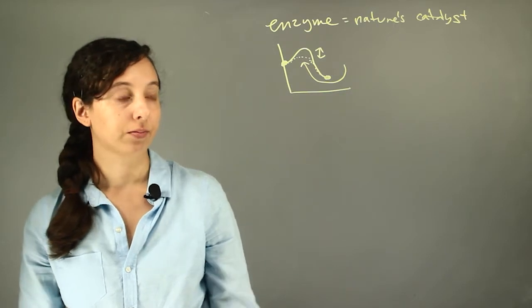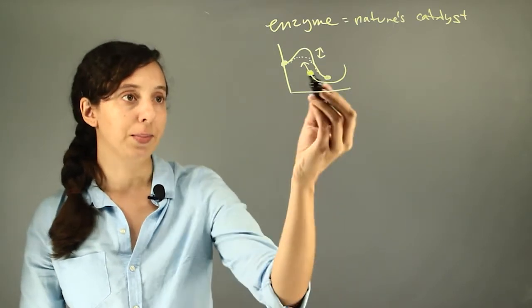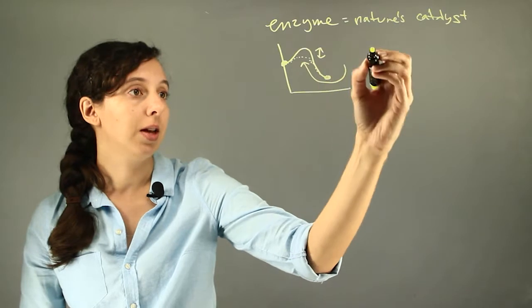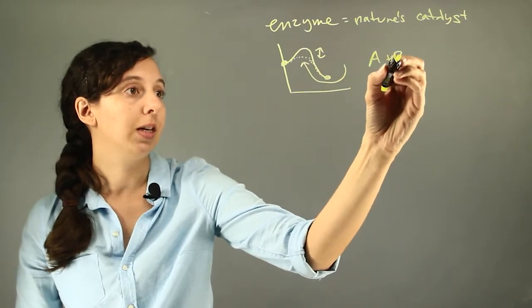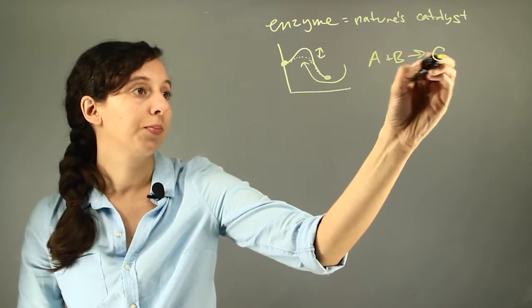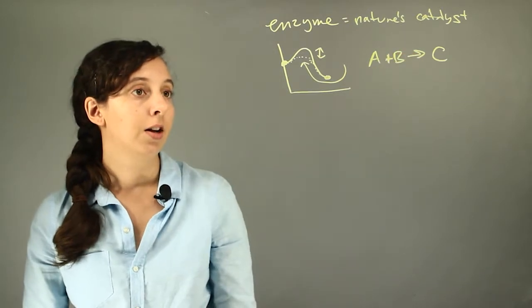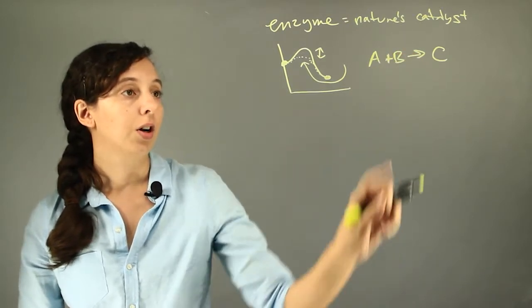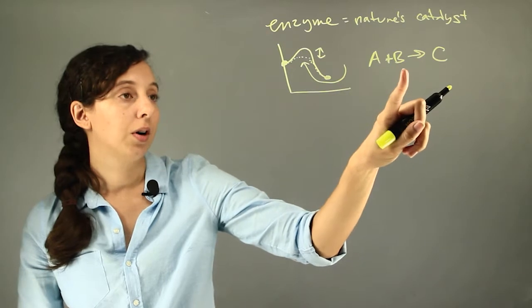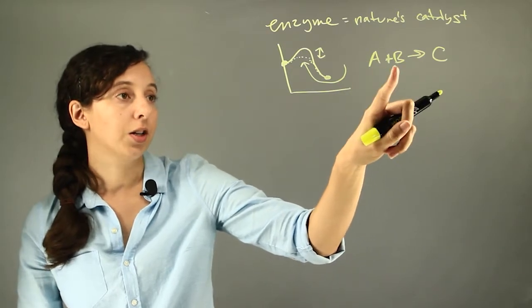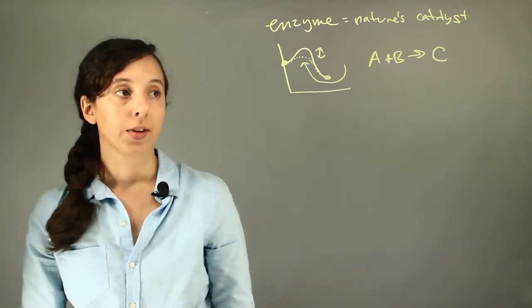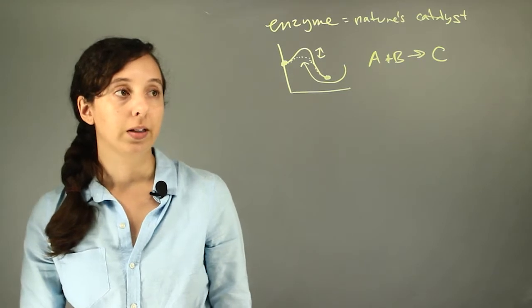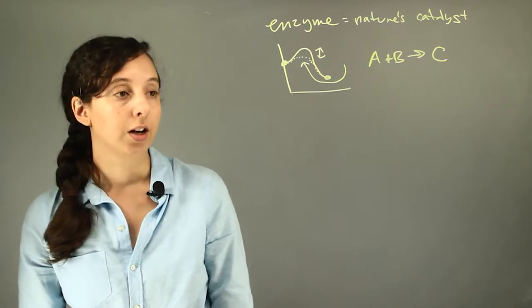So what's the sequence of events for this happening? Without the enzyme, if you just have A plus B goes to C, then basically you're on your own waiting for A and B to knock together to form C.